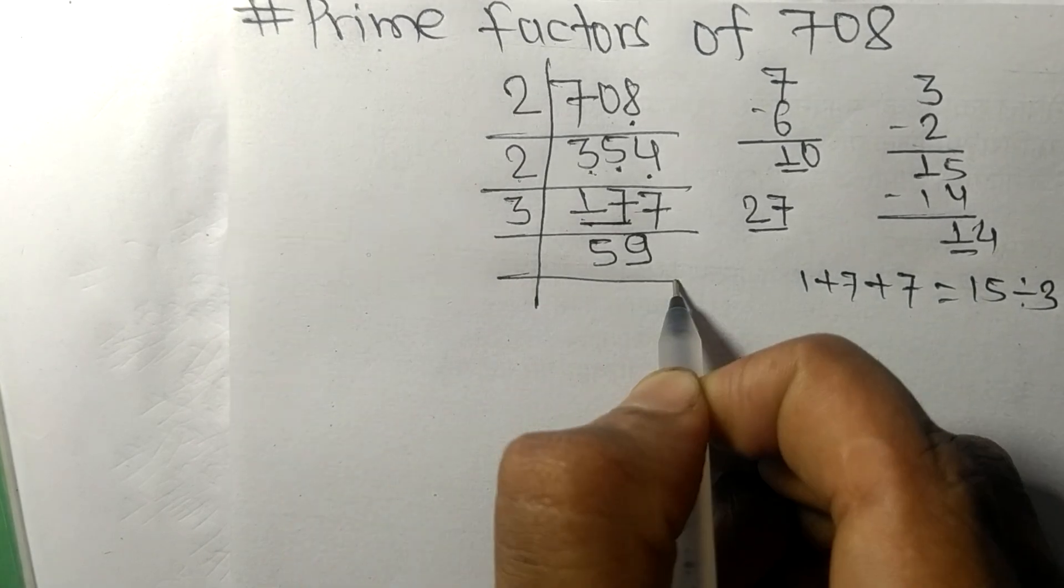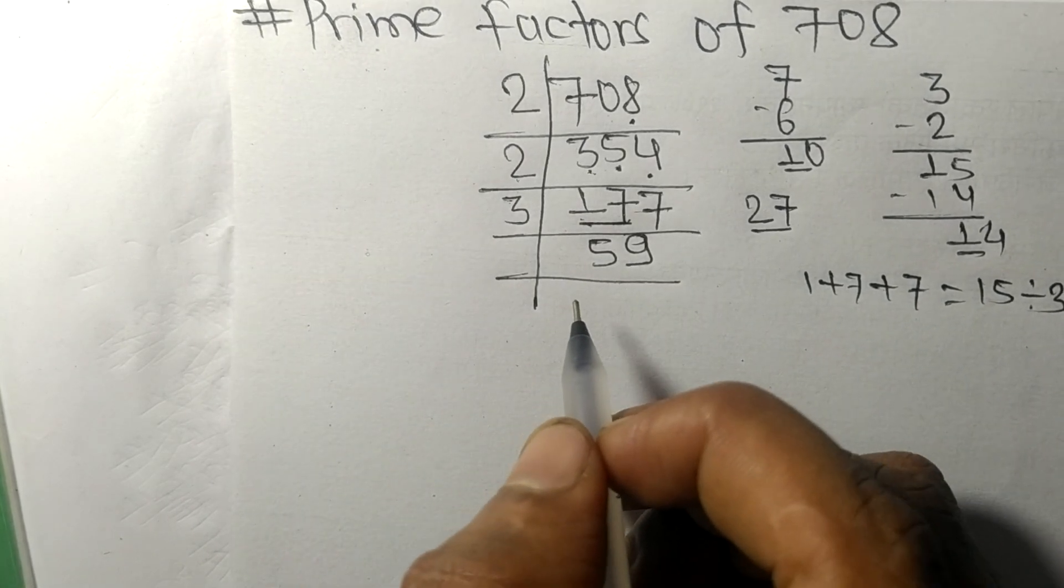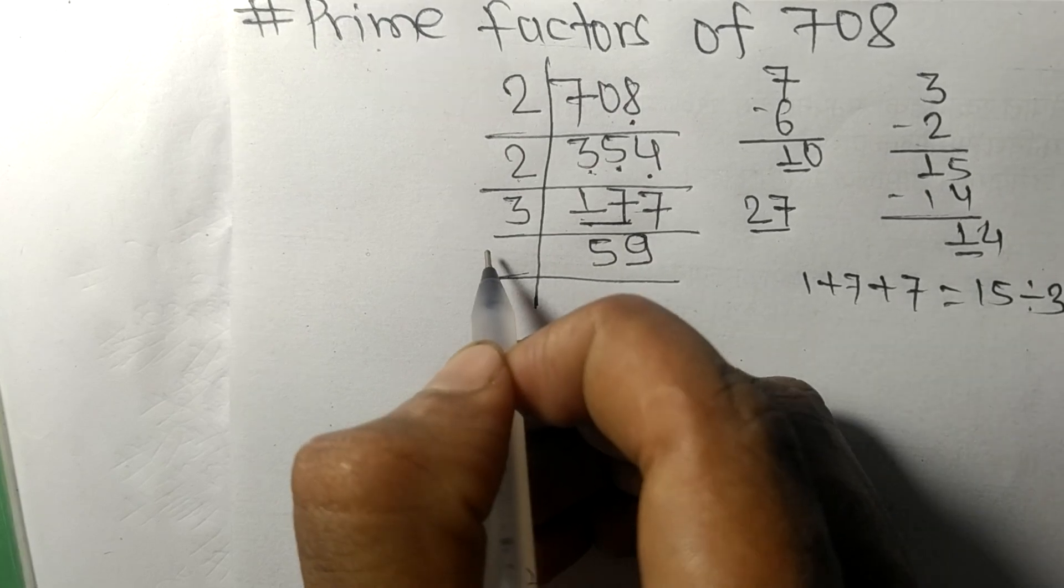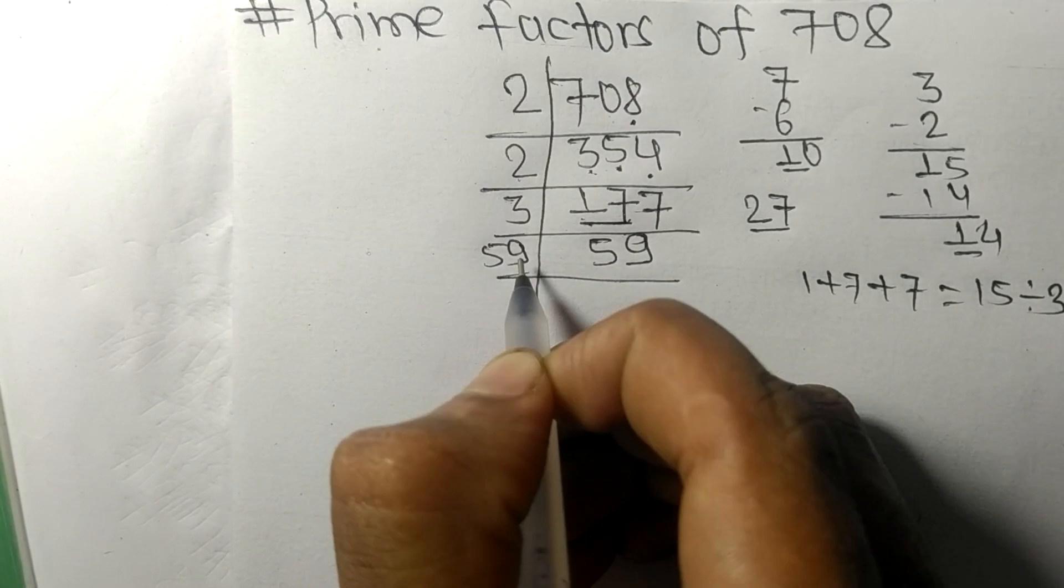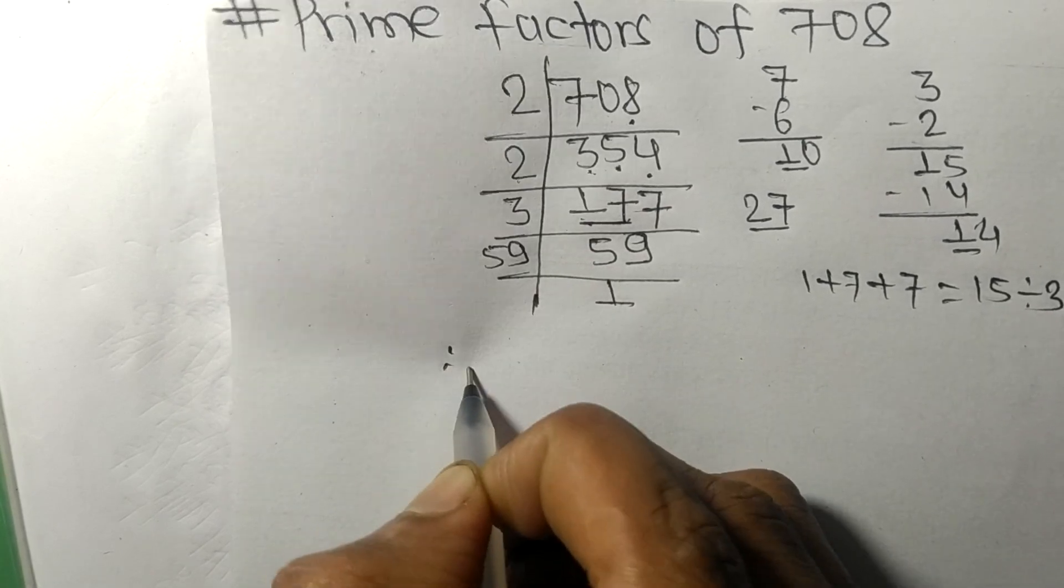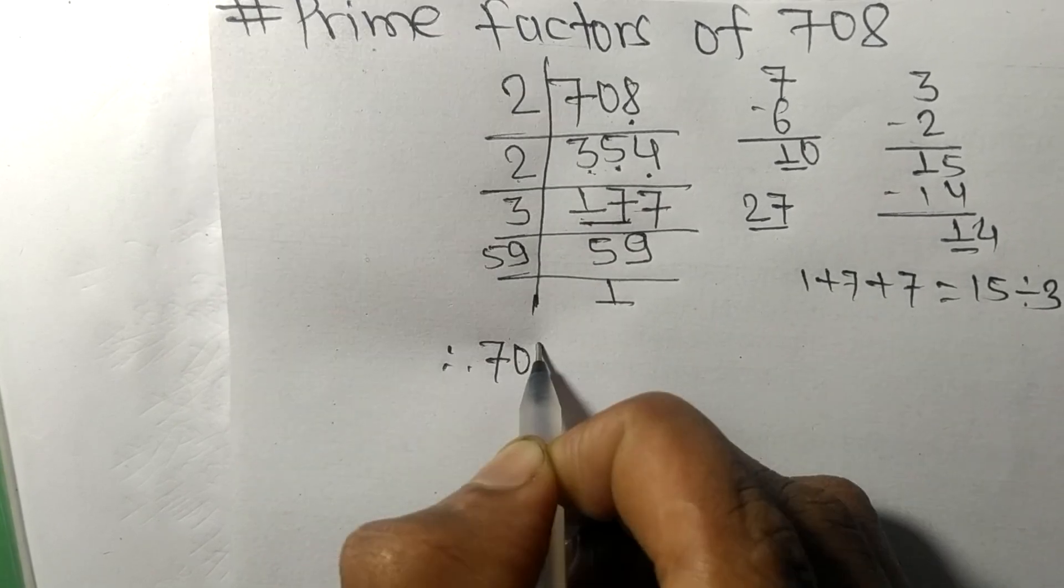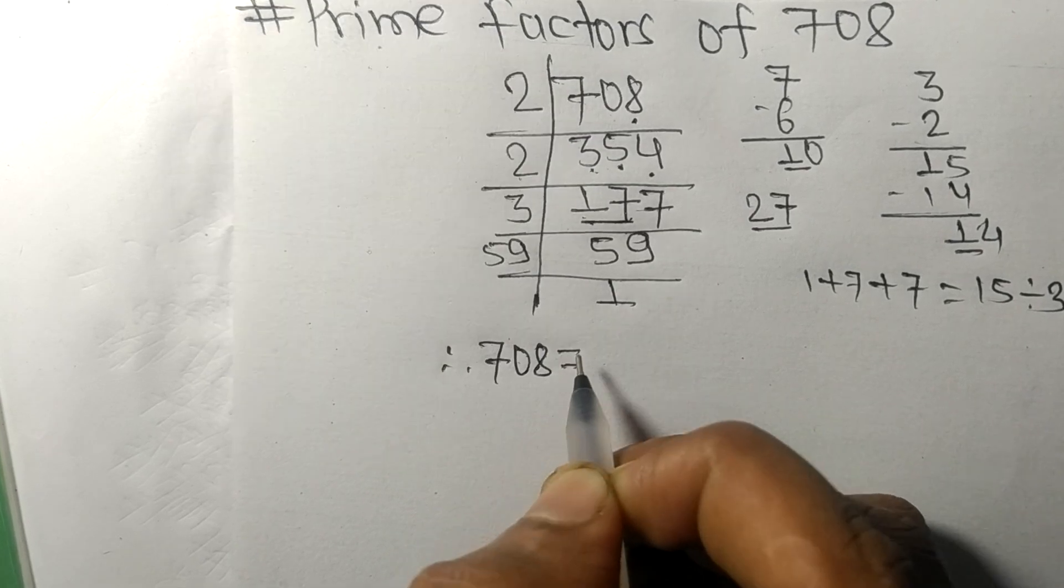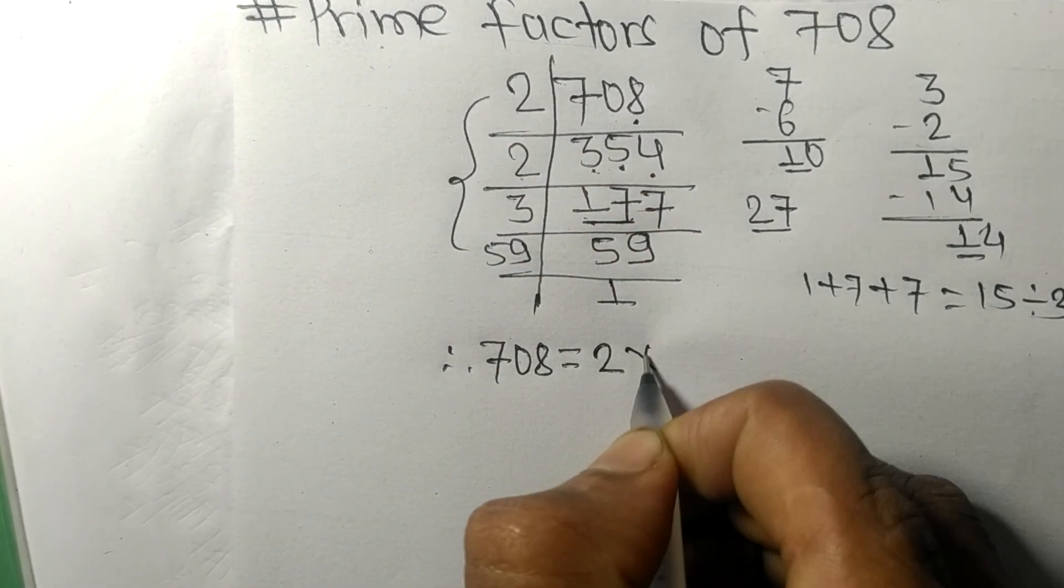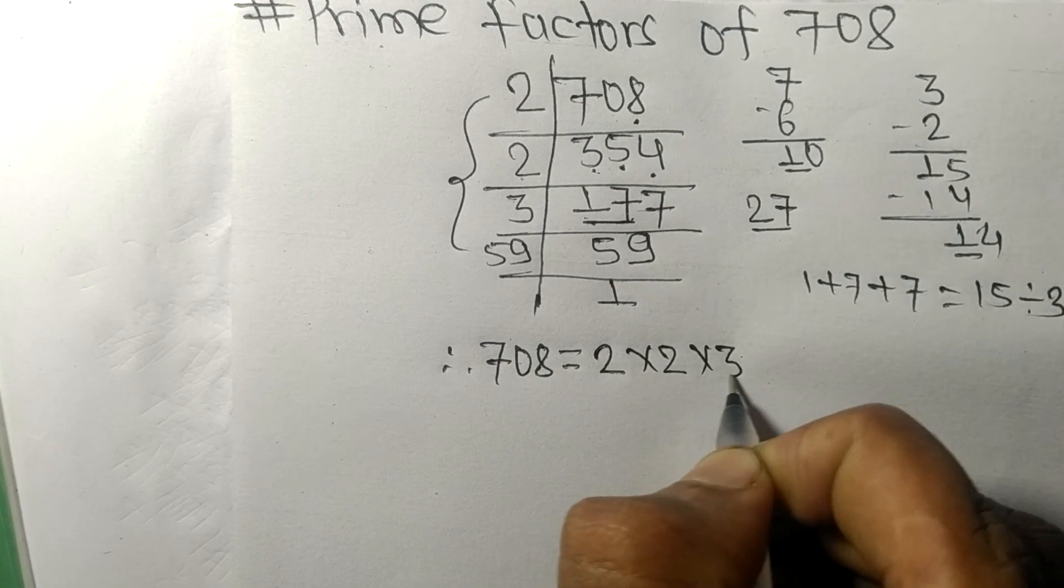Now we got 59, which is our prime number, so it is divisible by 59 only. On dividing we get 1. Therefore 708 is equal to, from this side, 2 times 2 times 3 times 59.